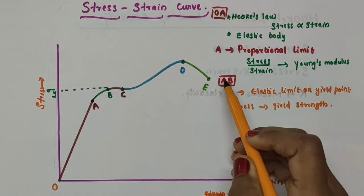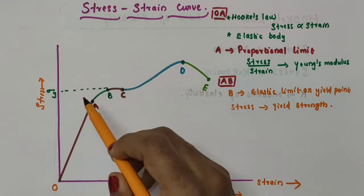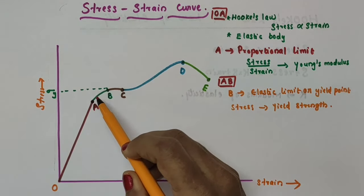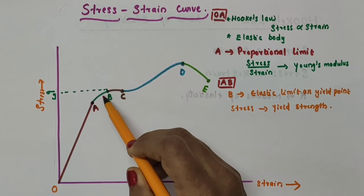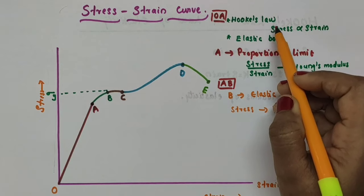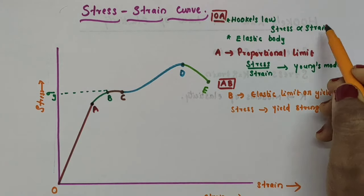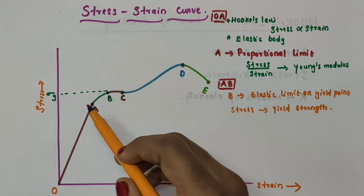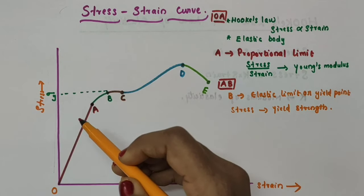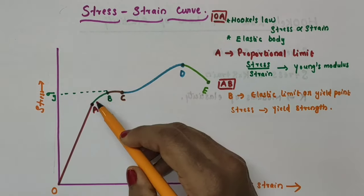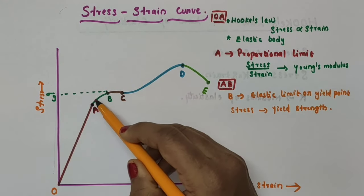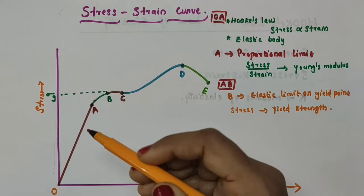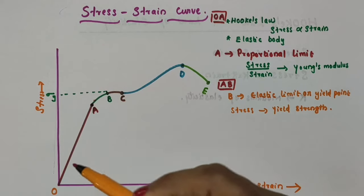Now consider the region between A and B. In this region from A to B, you can see that the curve is not a straight line. So stress is not directly proportional to strain. However, the body still returns to its original dimension when the load is removed. So in this region, stress and strain are not proportional, but the body retains its elastic property by which it returns to its original dimension when the applied force is removed.